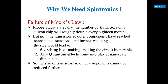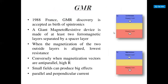This is the failure of Moore's Law — the number of transistors should change after 18 months, but it results in failure due to quantum effects. Then comes GMR, which we have seen in previous classes. In 1988, GMR was discovered and is accepted as the birth of Spintronics.